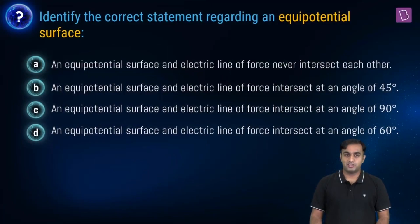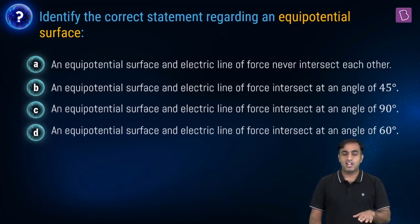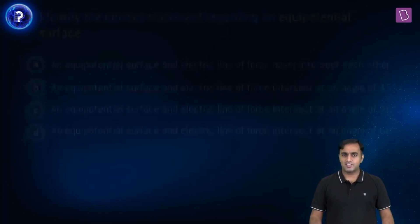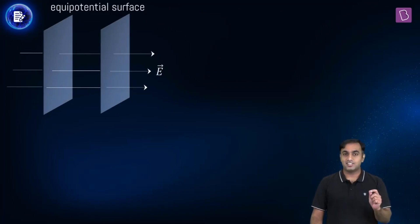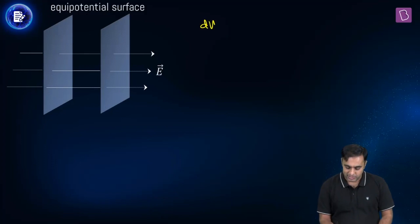We have a conceptual question about finding the angle between an equipotential surface and the line of force in that region. To answer this, we need the equation that connects the potential difference between two points, the displacement between those points, and the electric field. It can be written as dV equals minus E dot dr.